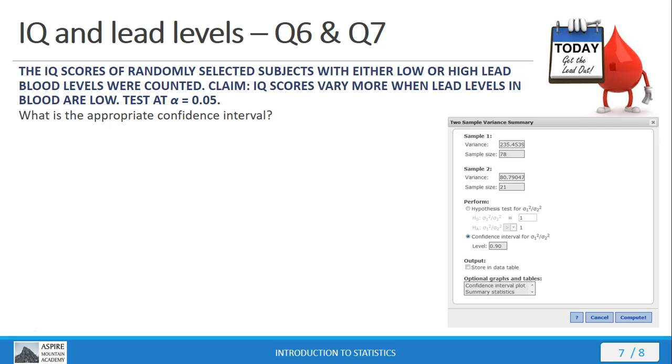going back to our options window, notice we're using 1 minus 2 alpha for our confidence level because there's a match between our claim and our alternative hypothesis. So to account for the two populations that we're testing, we want to have 1 minus 2 alpha for our confidence level.